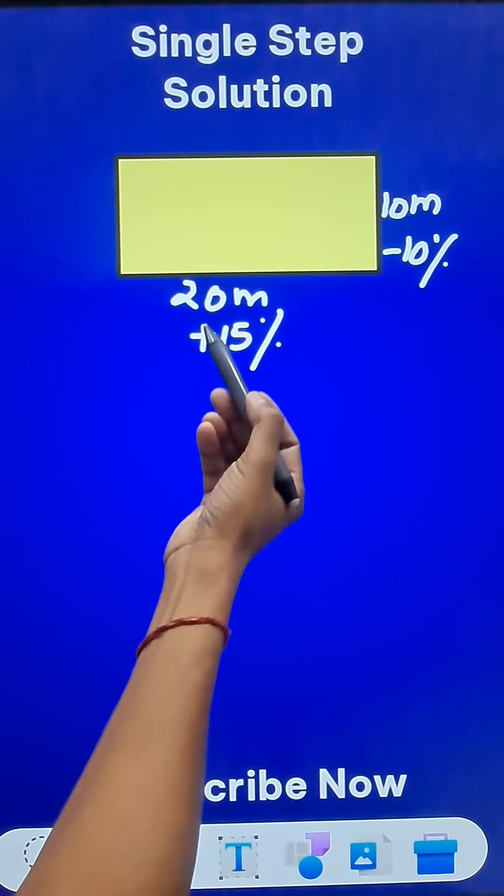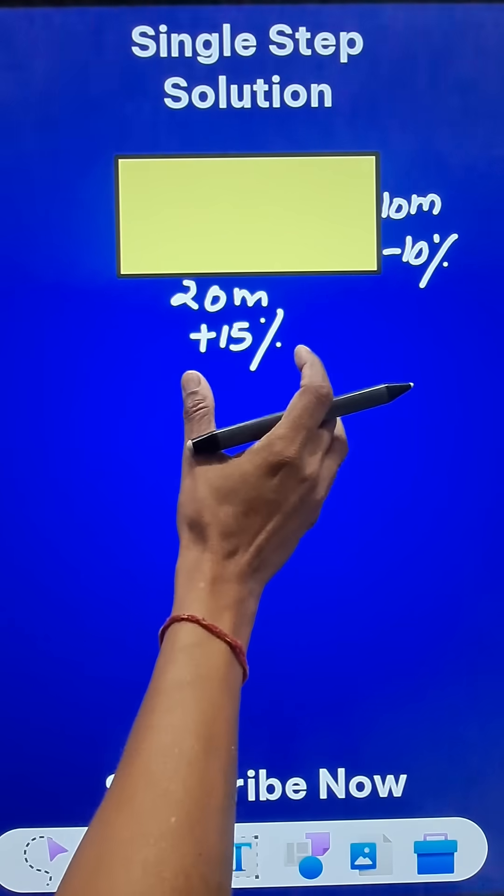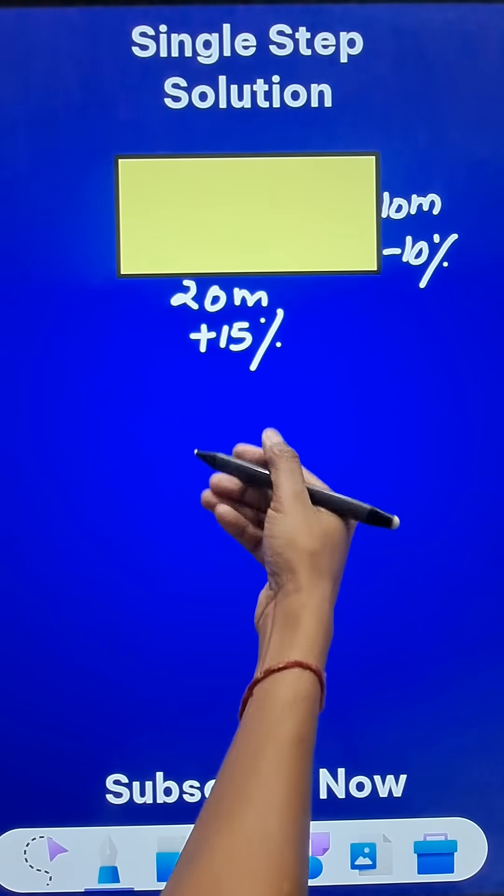You will be finding the original area, then the new dimensions, then new area and then you will find the percentage change by using change in area upon original area into 100.